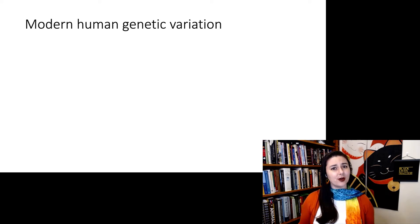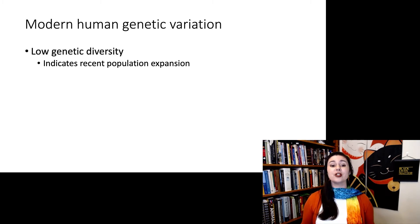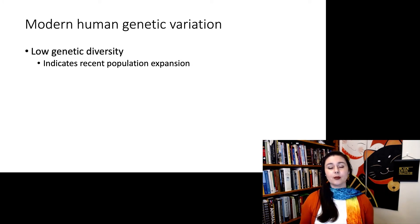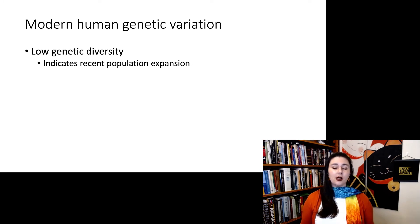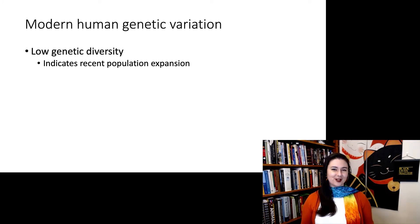We also have a lot else we can say about modern human genetic variation. Overall, there is just low genetic diversity amongst all humans. This indicates that we're just young, or there's a fairly recent population expansion. Remember, the earliest individuals of our species are about 300,000 years old.